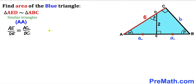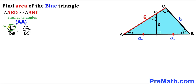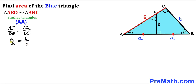Since the triangles are similar, we set up a proportion: AE over DE equals AC over BC. Substituting, a over 2 equals 6 over b. Multiplying both sides by 2 to isolate a, we get a equals 12 divided by b. Let's call this Equation 1.